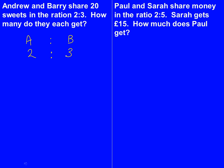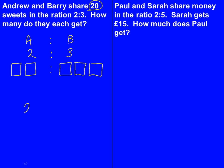So we're going to draw this now as boxes. Andrew gets 2 boxes and Barry gets 3 boxes. They are sharing 20 sweets between the two of them, and there are 5 boxes between the two of them. So we're doing 20 shared by 5 boxes, which gives us 4. So 4 sweets go in each box.